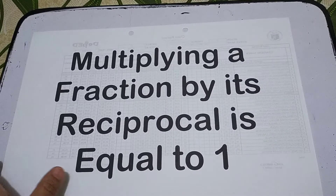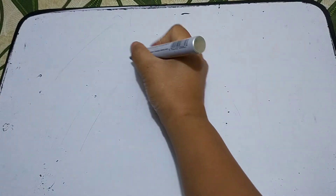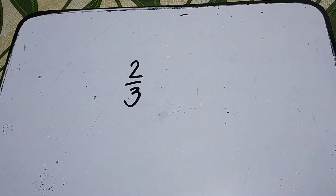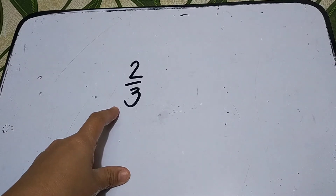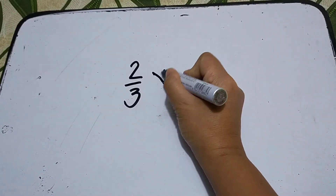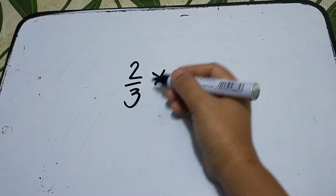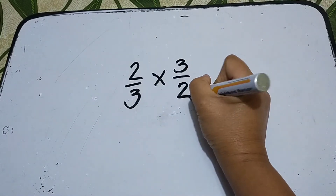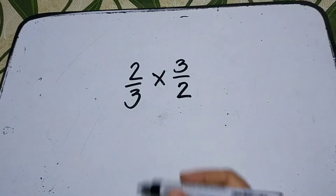In multiplying a fraction by its reciprocal, we're going to swap the numerator and the denominator. So let's say two-thirds — the reciprocal of that is 3 over 2, so we swapped the positions of the numerator and denominator.